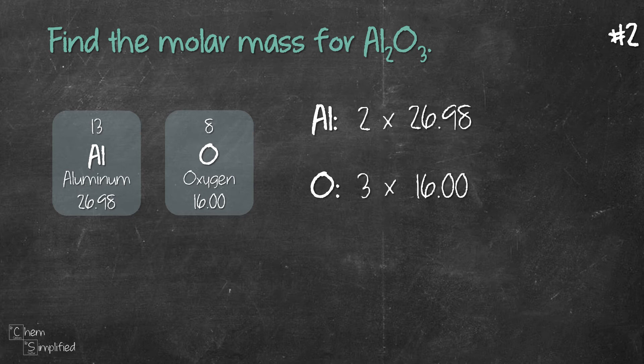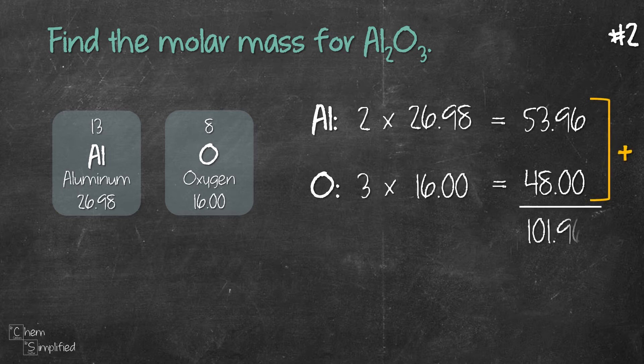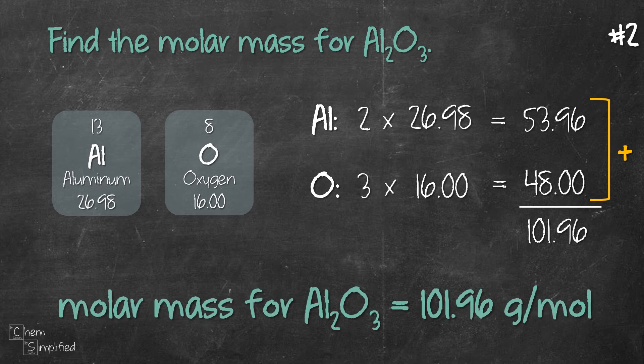So for aluminum we get 53.96 and for oxygen we get 48.00. Then we add them up and we get 101.96. So the molar mass for Al2O3 is 101.96 grams per mole.